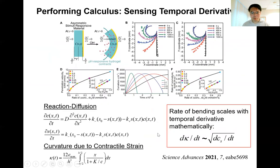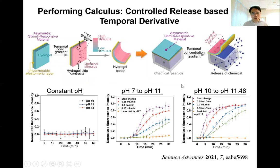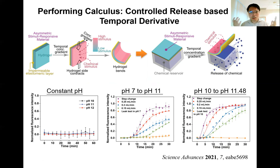We have performed numerical analysis and theory, and we found that there is a mathematical relationship between the rate of bending and the temporal derivative. Specifically, the rate of bending scales with the square root of the temporal derivative. Not just that it can sense the temporal derivative, we can also use it for controlled release of drug molecules. For example, we can lay this material on top of a reservoir that contains drug molecules. Because the material controls based on the temporal derivative, this controlled release can also be used for analyzing the surrounding temporal derivative.